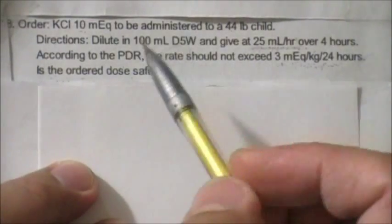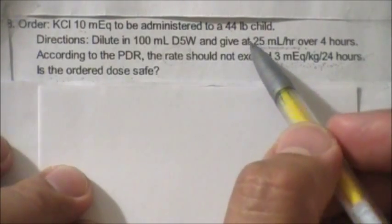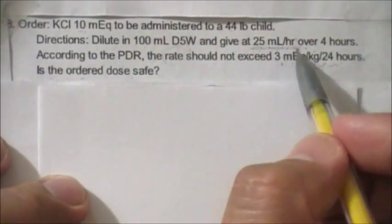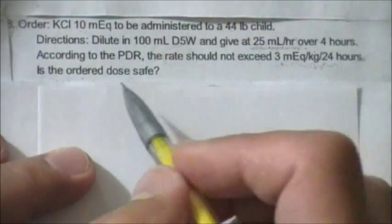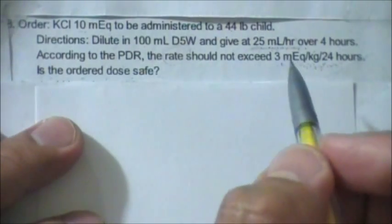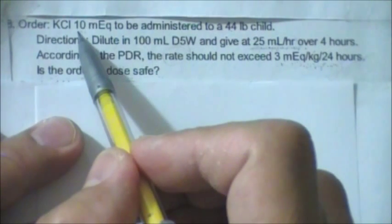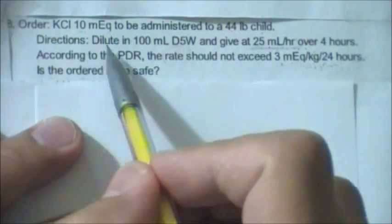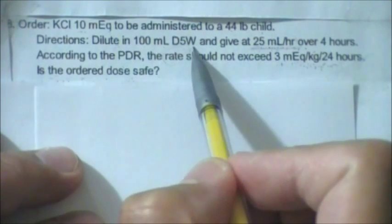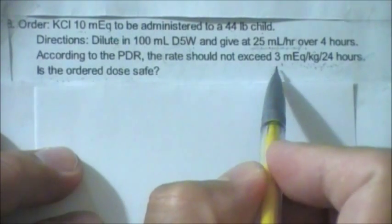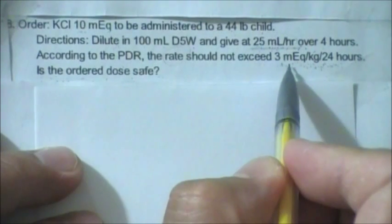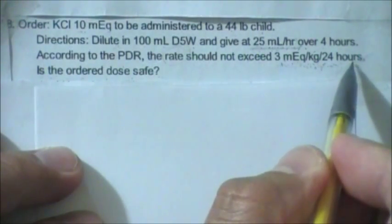Our problem: the order is KCL 10 mEq to be administered to a 44-pound child. The direction is to dilute in 100 mL D5 water and give at 25 mL per hour over four hours. According to the PDR, the rate should not exceed 3 mEq per kilogram per 24 hours. Is the ordered dose safe?